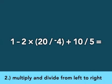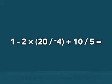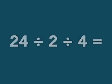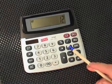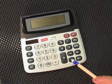Rule of thumb 2: Multiply and divide from left to right. Multiplication and division have higher priority than addition and subtraction. To solve this equation, you must first calculate 24 divided by 2 to get 12. Then calculate 12 divided by 4 to get the final result of 3.